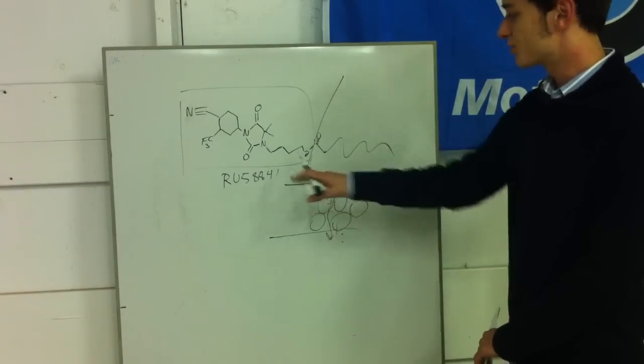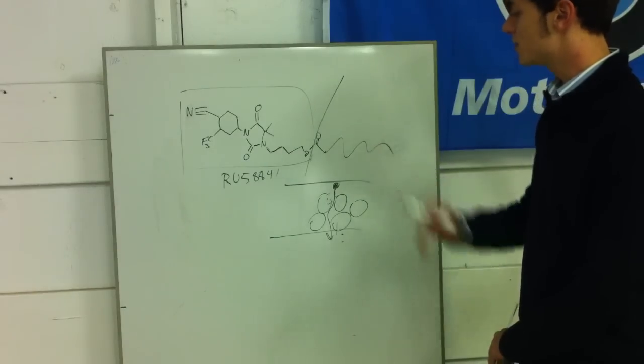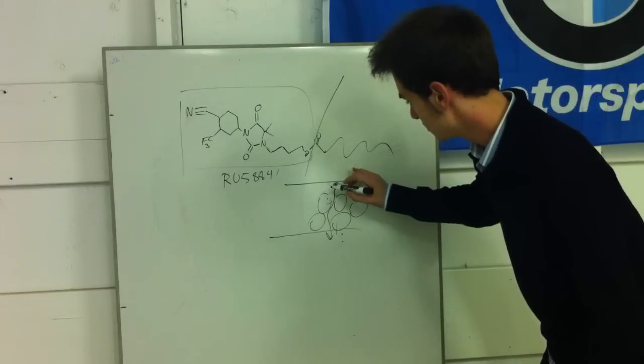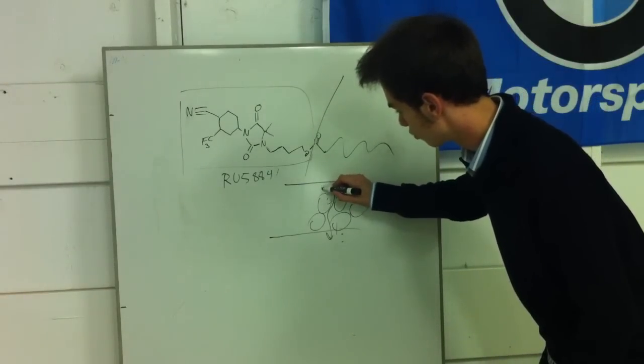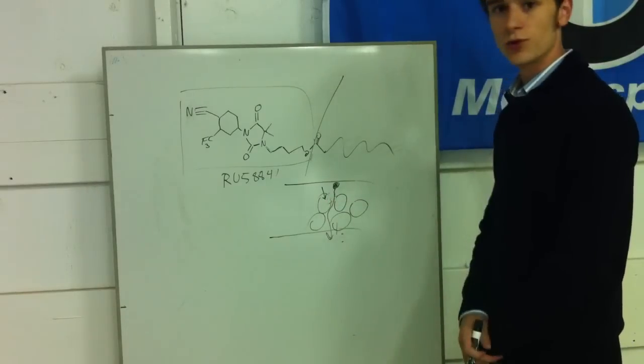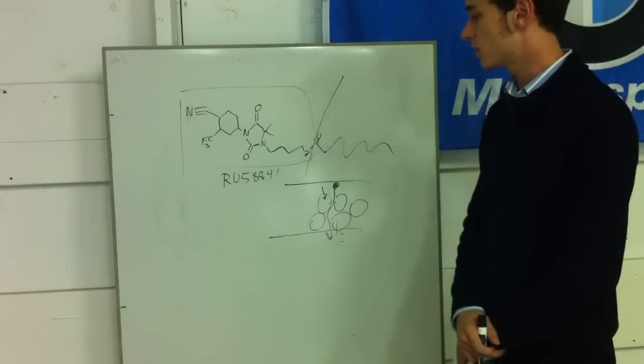What RUM does is, because it is lipophilic in nature, when it is in the skin, it will selectively pass into the cells, where then it will be cleaved and turned into RU58841.